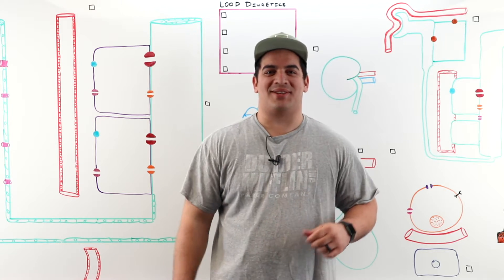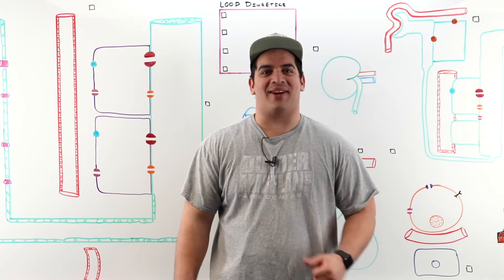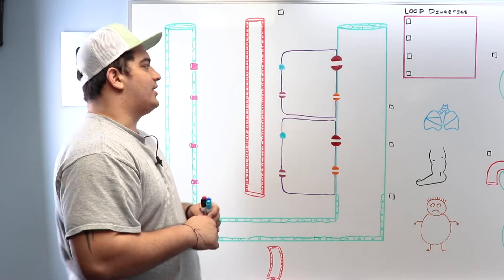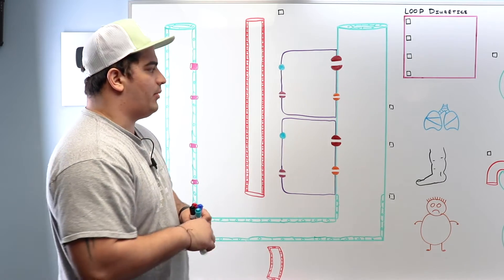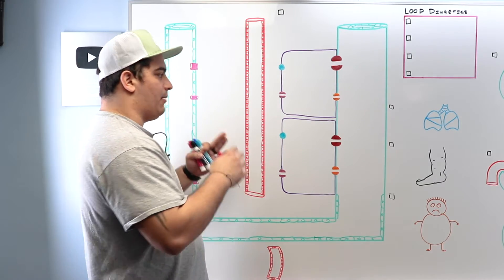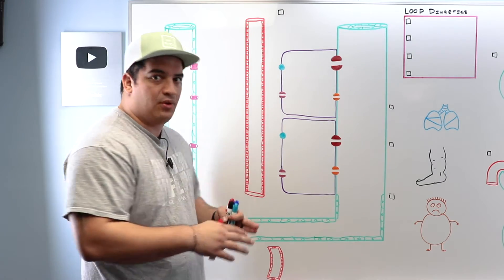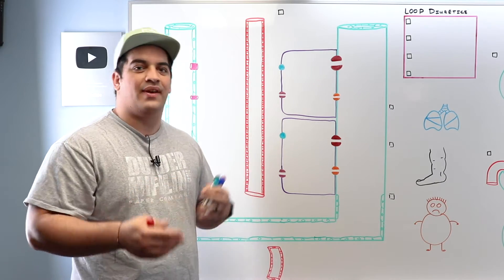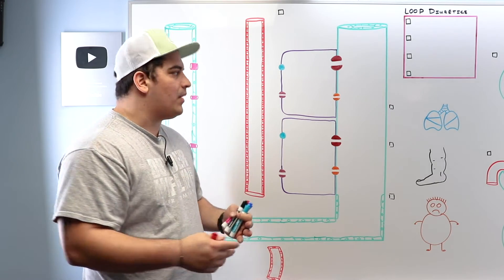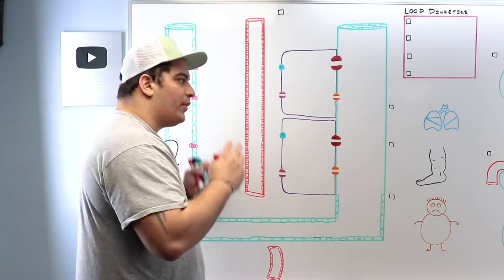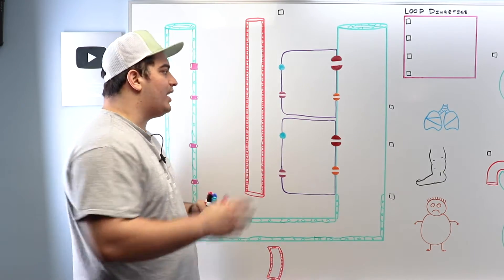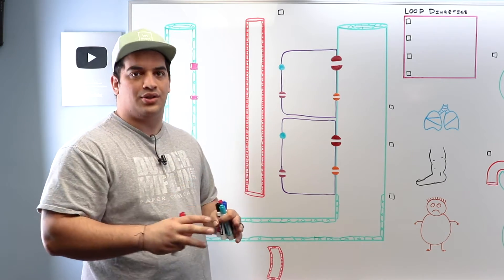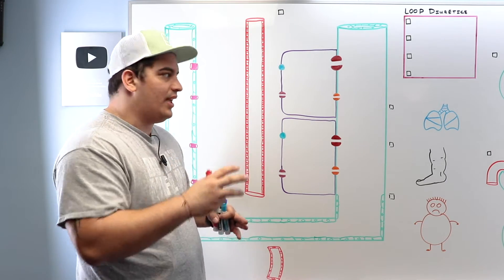Hi Ninja Nerds, in this video we're going to talk about loop diuretics. When we talk about loop diuretics, we have to understand the mechanism of action, what they're utilized for, their side effects and their ADRs. But before we start doing all of that, we really have to understand just the basic physiology within the kidneys.